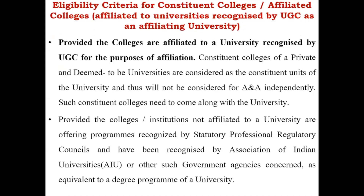Previously I covered the eligibility criteria for universities, affiliated colleges which are part of universities, deemed universities, or private universities. Constituted units must come along with the universities — they cannot apply independently. Colleges or institutions not affiliated to any university but whose programs are recognized by the Association of Indian Universities (AIU) are called standalone institutions. Standalone institutions can also apply for NAAC assessment and accreditation.